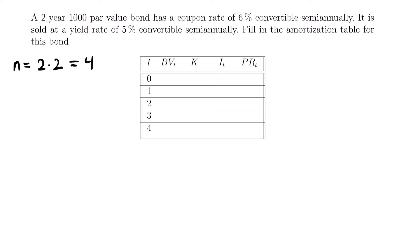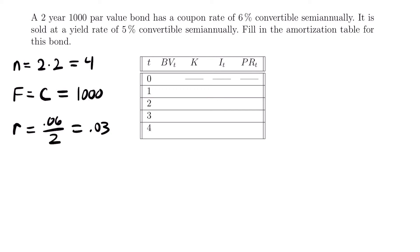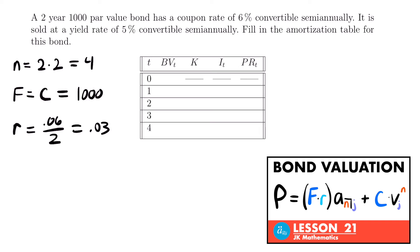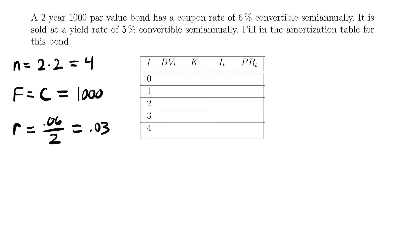The par value is 1000, so the face value F and redemption value C are both equal to 1000. The coupon rate is 6% convertible semi-annually — a nominal annual rate — so we divide by two: r equals 0.06 divided by 2, which equals 0.03. The yield rate is 5% convertible semi-annually, also a nominal annual rate divided by two: j equals 0.05 divided by 2, which equals 0.025.